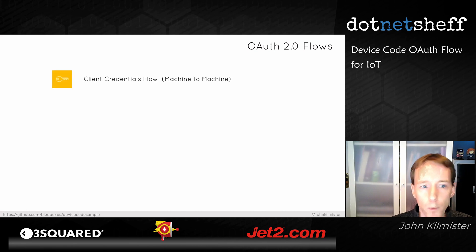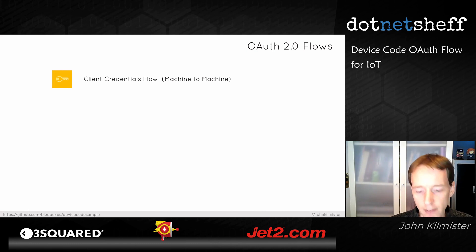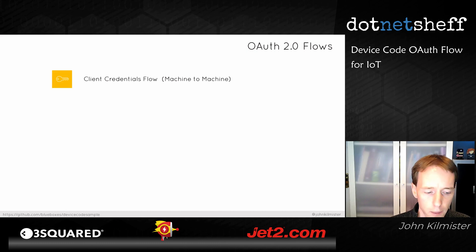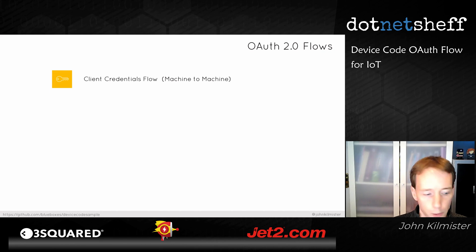The most simple flow is client credentials — machine to machine. If you've got a service that only ever needs to connect to one third party, and you've both shared a client ID and secret, they can work together. But this wasn't suitable for what I needed — I was building a Windows service that I wanted lots of different people to use and attach to their Microsoft account.